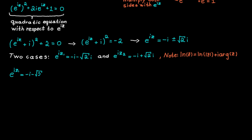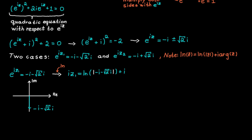For the first case, ic equals the natural logarithm of the absolute value of minus i minus the square root of 2i, plus i times the argument. We need to determine the principal argument for this complex number. As shown in the image, there are two angles describing it: minus pi divided by 2, and 3pi divided by 2. Since the principal argument must lie between minus pi and pi, the principal argument is minus pi divided by 2. The length of the complex number is 1 plus the square root of 2.